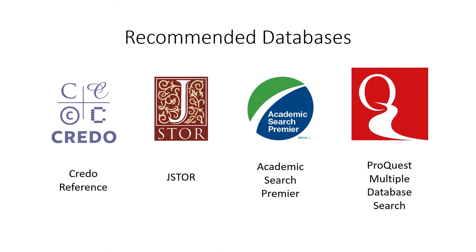Credo Reference is sort of like Wikipedia, but it's scholarly. It includes summaries and introductory information about thousands of topics. It even tells you where you can find more information about your subject. JSTOR offers a lot of articles and ebooks and is easy to search by subject or topic. Academic Search Premier and ProQuest Multiple Database Search are both multi-subject databases. They have a lot of information about everything. They're a great place to start your research because they can lead you to scholarly articles, newspapers, ebooks, and multimedia resources. Sometimes the results can be overwhelming, but you'll be able to see the breadth of information that is available to you.